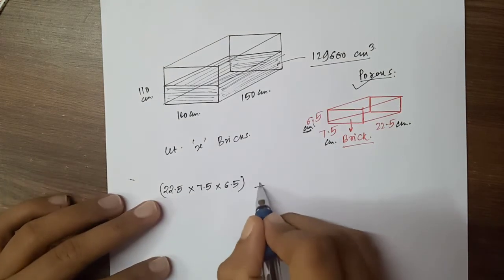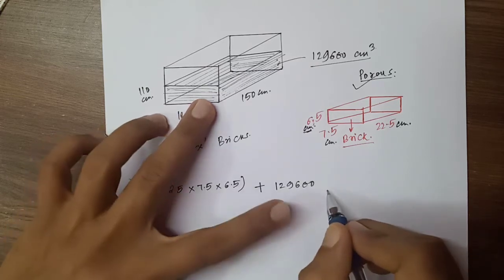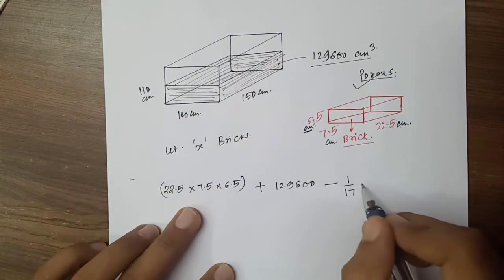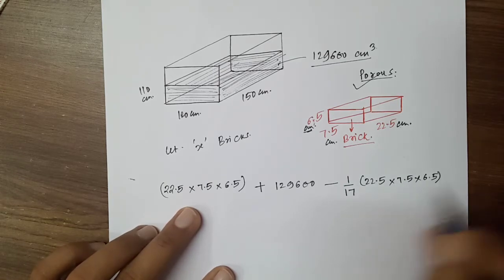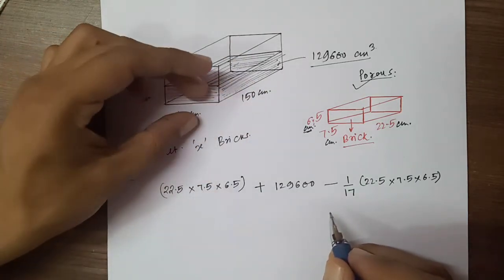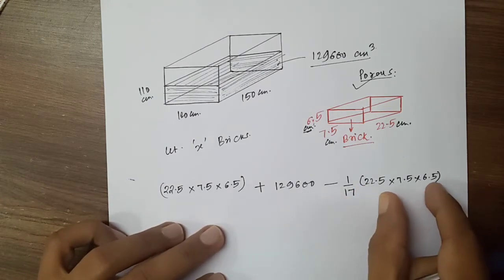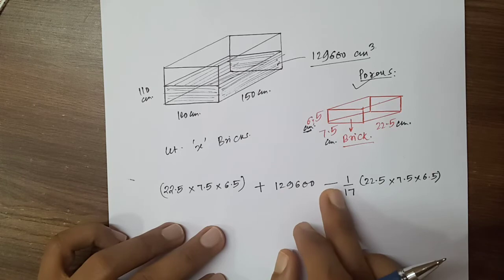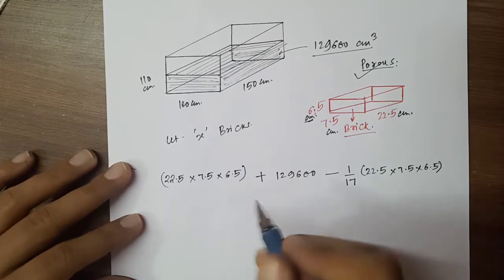Now this brick, the water volume is 129600. This will be subtracted, the water volume will decrease by 1/17th of the brick's volume: 22.5, 7.5, into 6.5. That means one brick will be placed. So this brick volume will come. But the water volume decreases by 1/17th because the brick will absorb that amount of water. So the level of water will be reduced and the brick will be added. But because x bricks, one brick has such a phenomenon, what will x bricks with such a phenomenon?